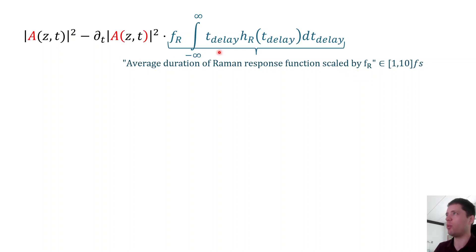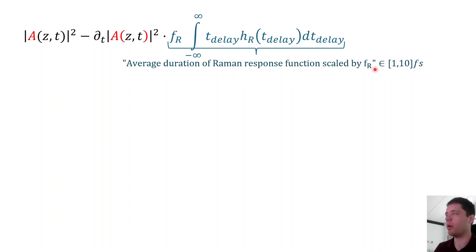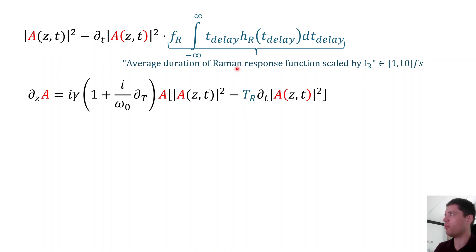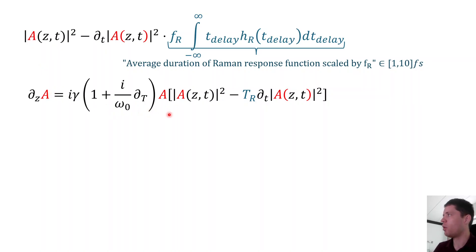Typically this whole integral will have a value on the scale of 1 to 10 femtoseconds, depending on the exact value of f_R and the exact nature of the Raman response function. If we plug all of this back into the expression for the generalized non-linear Schrödinger equation — or at least the non-linear contribution to it — we get this simplified expression instead of the convolution from before.